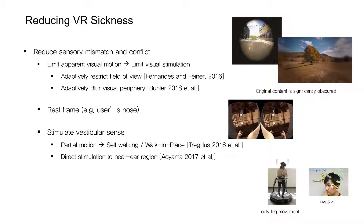There have been some conventional methods to address VR sickness. These methods try to reduce the sensory mismatch by limiting the visual motion or limiting the visual stimulation — for example, by reducing the field of view or blurring the peripheral visual field. It is also possible to try to modulate the vestibular sense, for example by inducing physical motion or directly stimulating the vestibular organ.